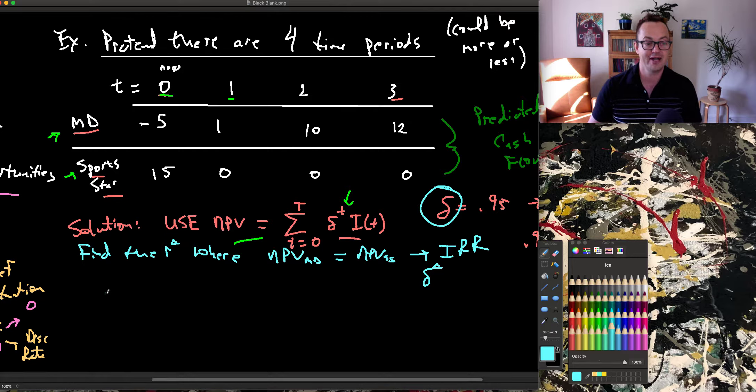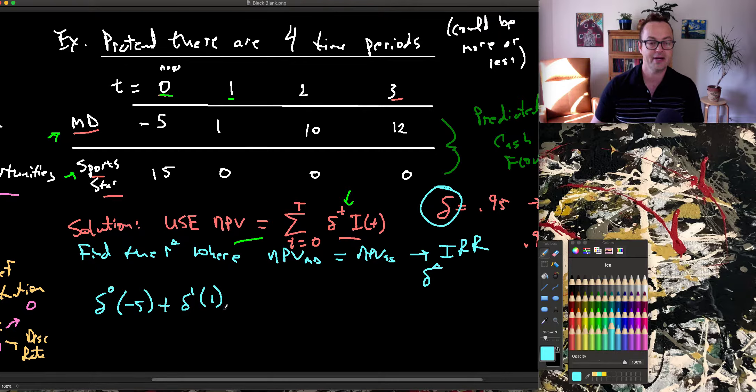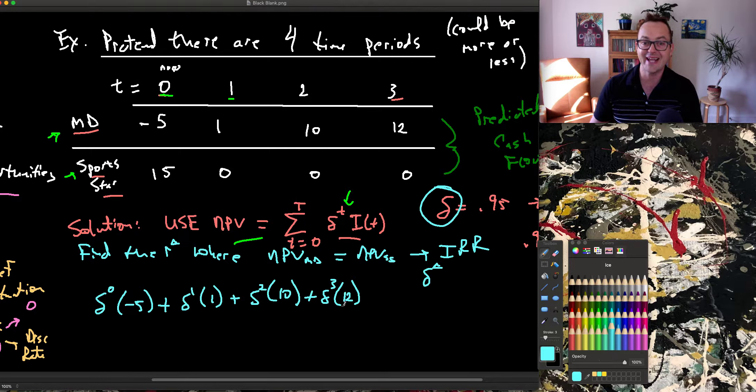So I'm going to do my same NPV calculation times minus 5. I'm going to do it for MD. Delta time period 1 times my cash flow from 1, delta time period 2 times my cash flow from 2, plus delta time period 3 times my cash flow from time 3. And that gives me the NPV for MD.